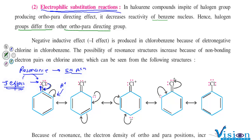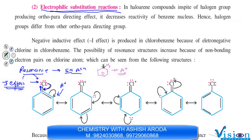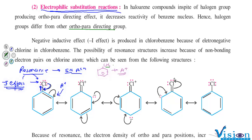If toluene were in place of chlorobenzene, it would give electrophilic reactions much more easily. Because the CH₃ group only donates electrons without withdrawing them. Halogen groups are a little bit different because they produce a negative inductive effect.